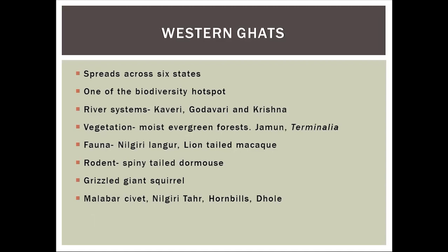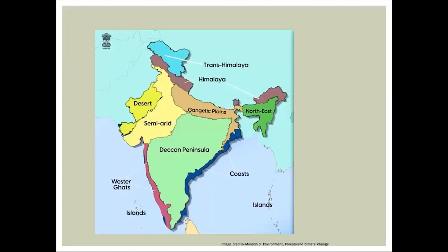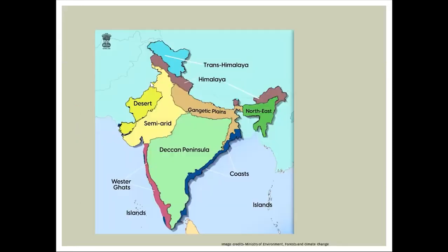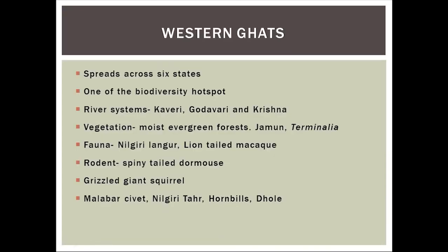The Western Ghats is a narrow strip on the western part of the country, spreading across six states beginning from Gujarat, Maharashtra, Karnataka, and Kerala. It is one of the biodiversity hotspots — biodiversity hotspot means the area is rich in species composition and they are highly endemic, meaning the species are found only in this region in the world. River systems like Kaveri and Krishna find their origin in the Western Ghats.